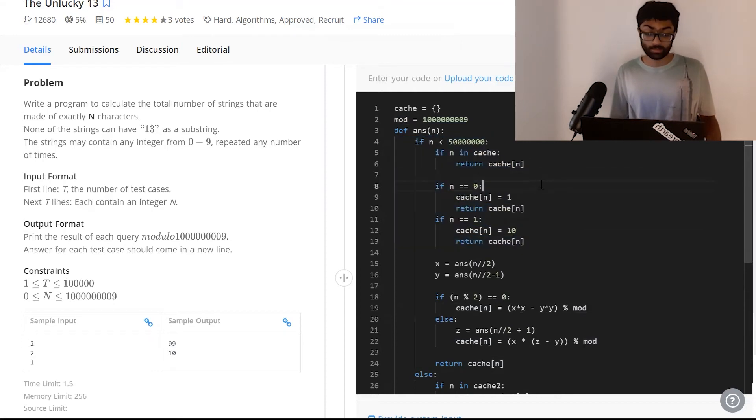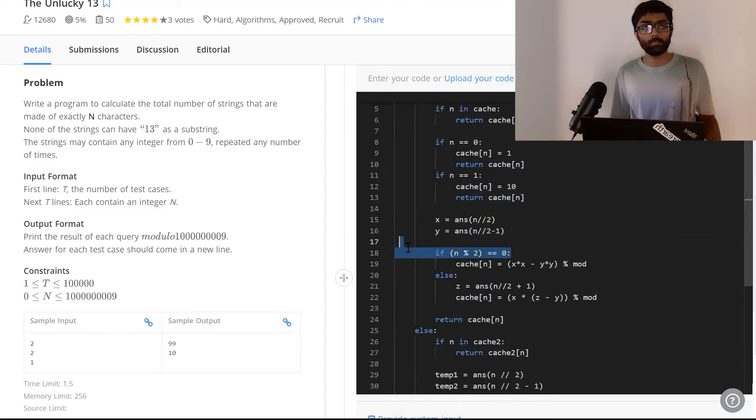Let's ignore the first two if conditions for now. These two are the base cases. If we don't have them, the program will continuously repeat itself, calling itself infinitely. If n equals 0, we return 1 and store it in our cache. A string of length 0 is an empty string, and there's only one possible empty string. If n is 1, we can put 0, 1, 2, 3, 4, 5, 6, 7, 8, 9—a total of 10 digits. If n percent 2 equals 0 (an even number), it's x into x minus y into y. If it's an odd number, we also calculate z and get x into y minus z.